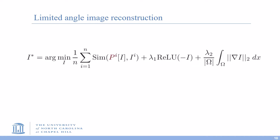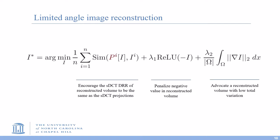So the loss function we used in this reconstruction algorithm is shown here. The first term is used to encourage the sDCT DRR of the reconstructed volume to be the same as the sDCT projections. The second term penalizes the negative intensities in the reconstructed volume. And the last term advocates a reconstructed volume with low total variation.